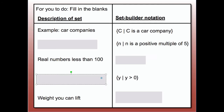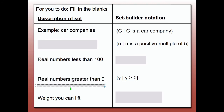Next: y — the set of all real numbers y such that y is greater than 0. You could have written 'real numbers greater than 0,' or 'positive real numbers.' Either one of those would have been correct.